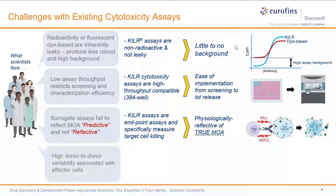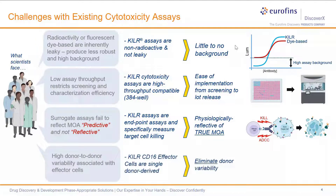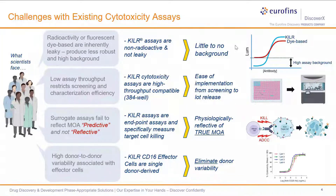One of the challenges with implementing cytotoxicity assays, particularly for lot release, is that high donor-to-donor variability associated with the effector cells used is a challenge for producing reproducibility over time. One way we have addressed that is by implementing a particular engineered effector cell that is still based on a primary cell from a single donor. This particular effector cell eliminates donor-to-donor variability and produces very high reproducibility over time.